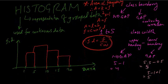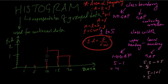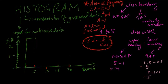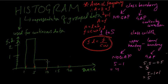So the frequency densities — the heights of the histogram bars — are 2.5, 0.4, 0.6, and 1. Plotting these heights against the class boundaries (1, 5, 10, 15, 20) on the x-axis gives the histogram, which looks like buildings of varying heights.